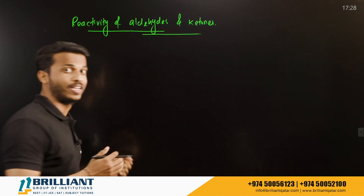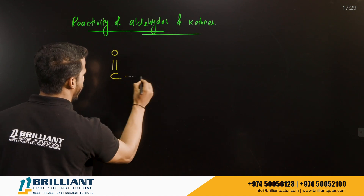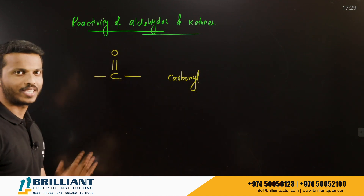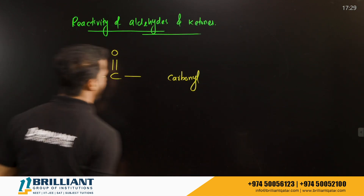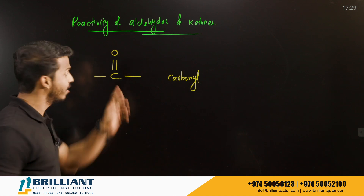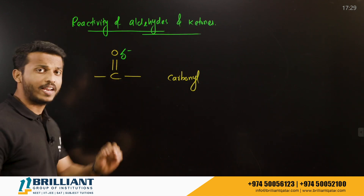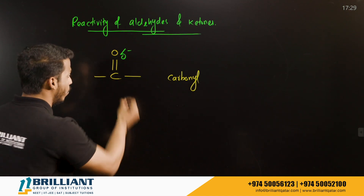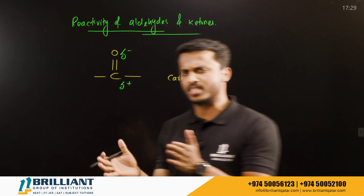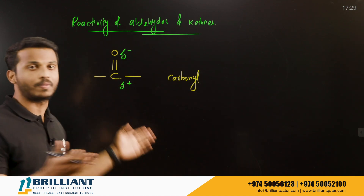Aldehydes and ketones share one common group — the carbonyl group. The carbonyl group is the C double bond O (C=O) group. When we consider carbon and oxygen, oxygen is more electronegative than carbon, so oxygen carries a partial negative charge (δ−) whereas carbon carries a partial positive charge (δ+), due to the difference in electronegativity between carbon and oxygen.